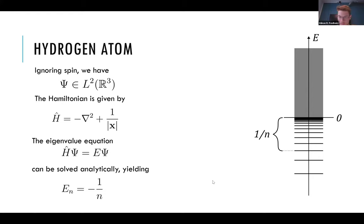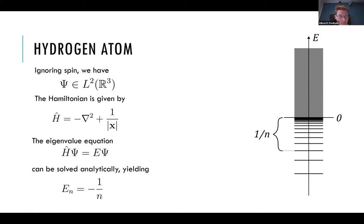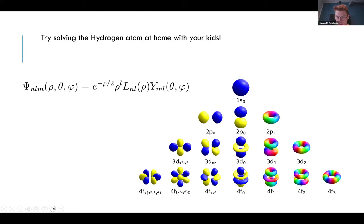If we ignore spin, the wave function is just a square-integrable function on R³, and the Hamiltonian is the second derivative plus a Coulomb potential. The eigenvalue equation can be solved analytically — this is a very nice result. It produces a spectrum where the energies go like one over n squared. So if you solve the hydrogen atom you get all of these eigenfunctions out, and you can list them. They sort of look like the ones shown here.